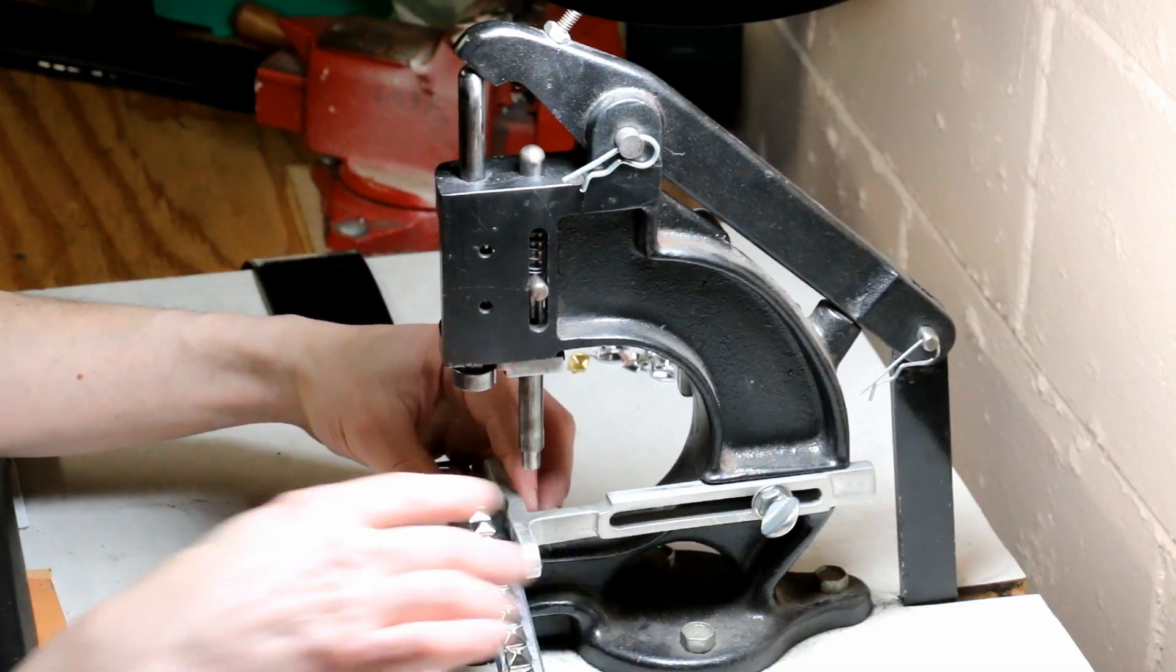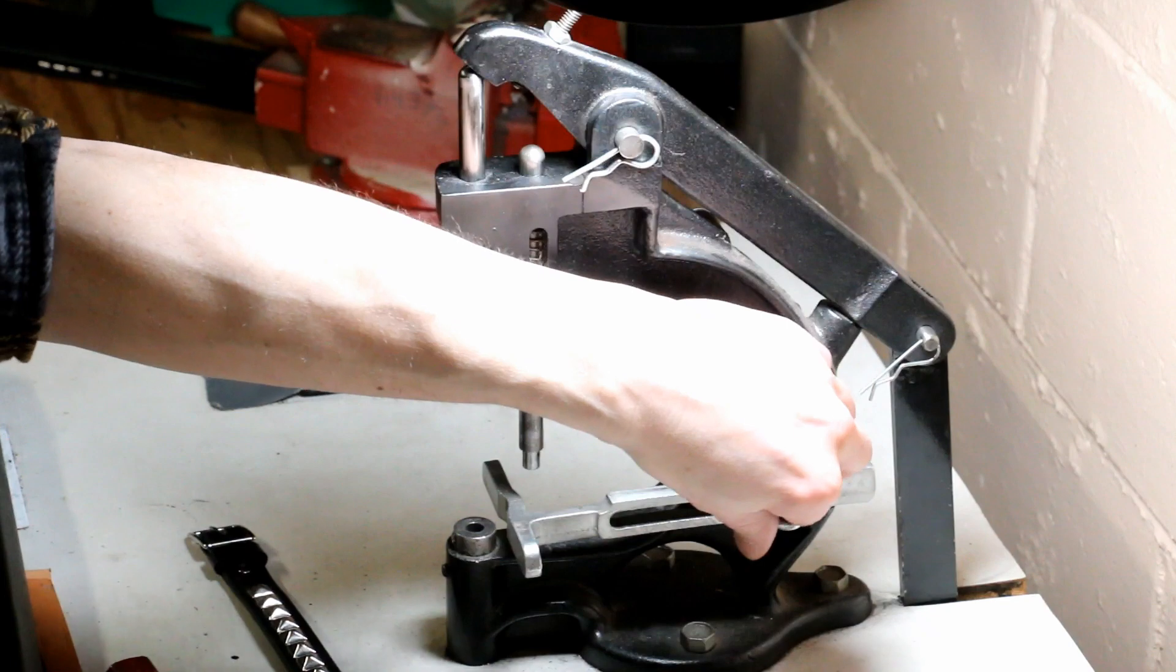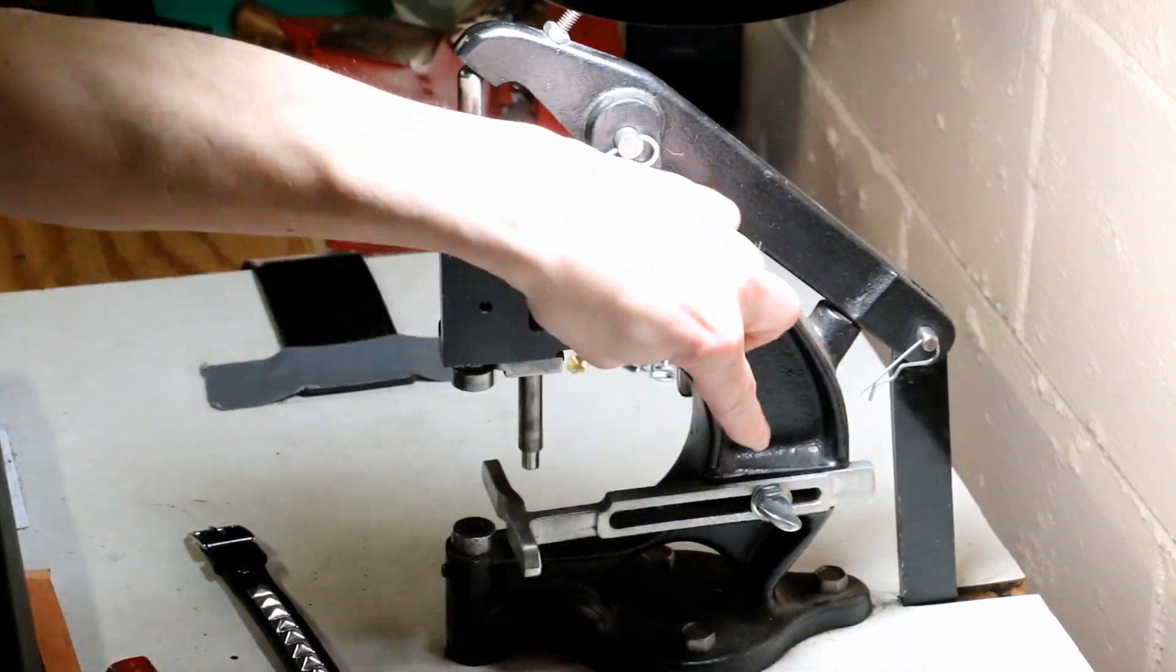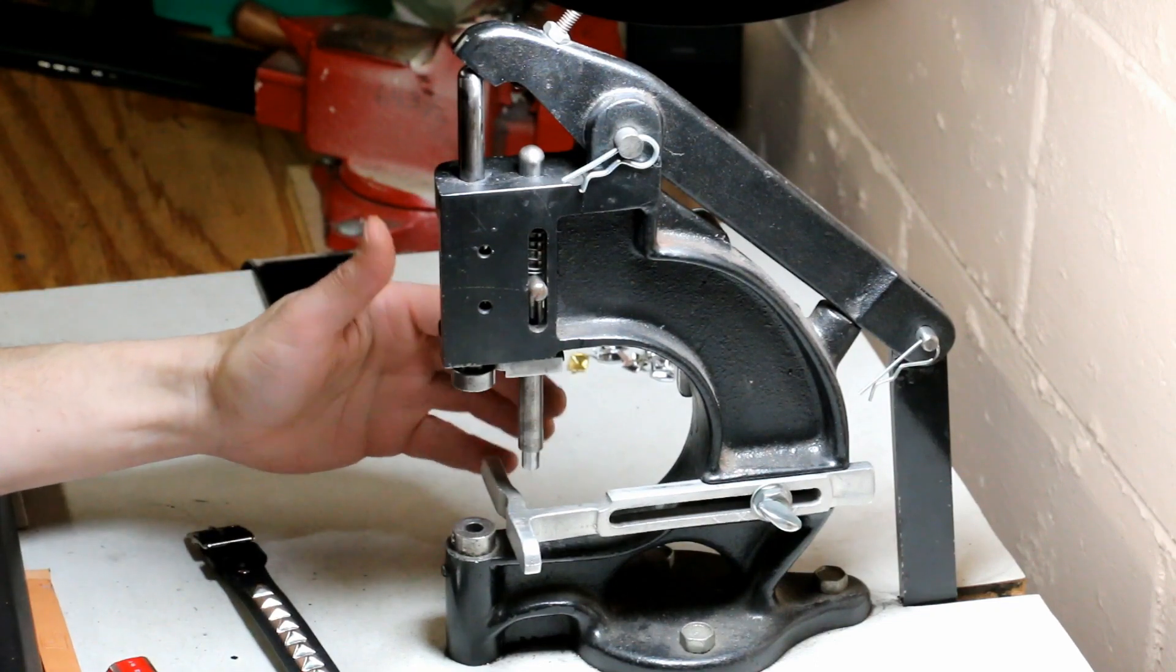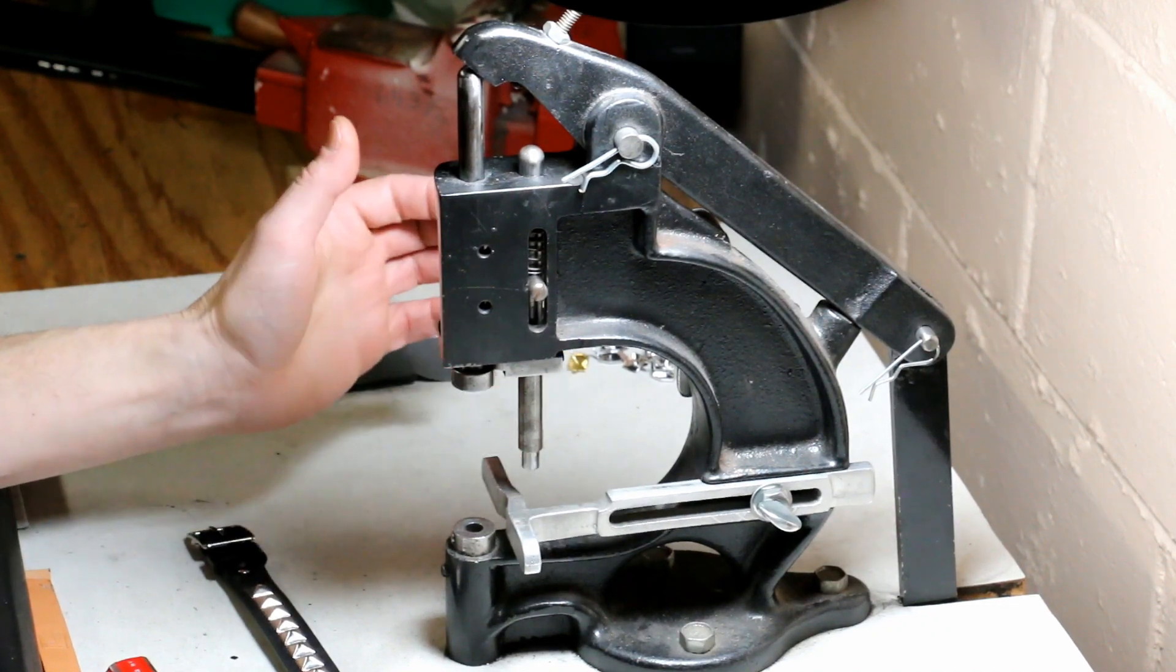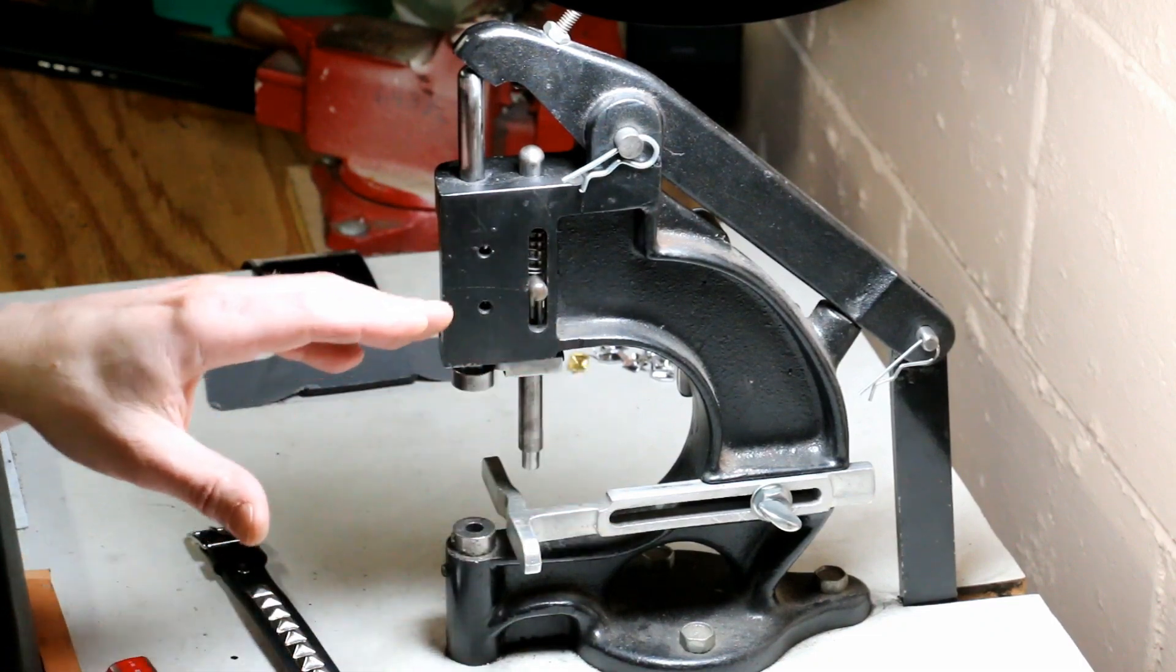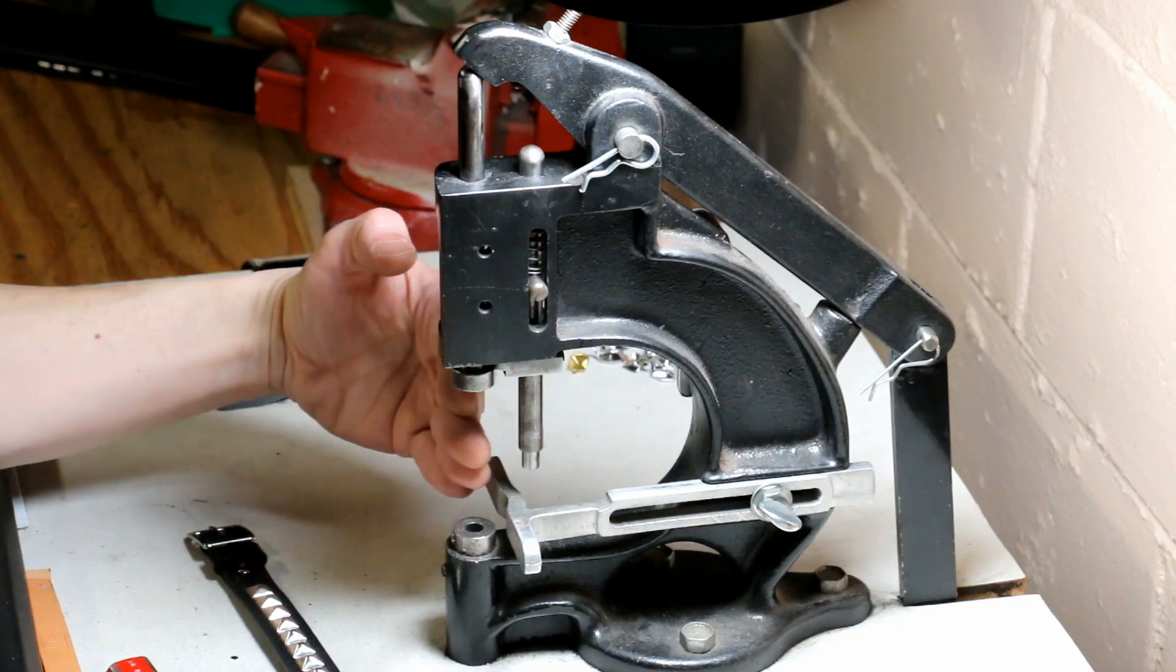So one of the problems with this guide - and this guide is supposed to keep everything lined up for you - one of the issues with it is that you have to give this a full strength twist in order to keep the guide from moving around. If you only kind of tighten it, then it will slide around on you. But there's a problem: when you give it that full strength twist, it nudges the guide forward just a little bit and you lose your alignment.